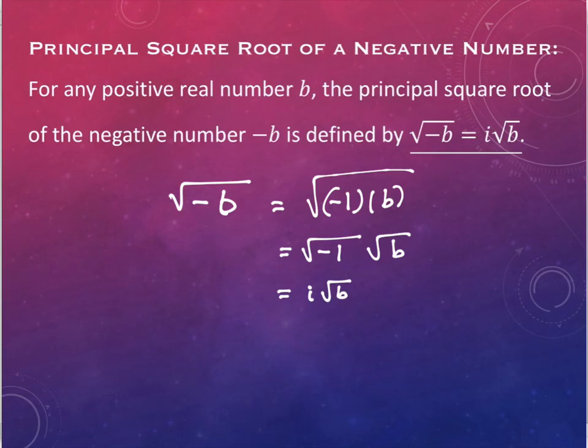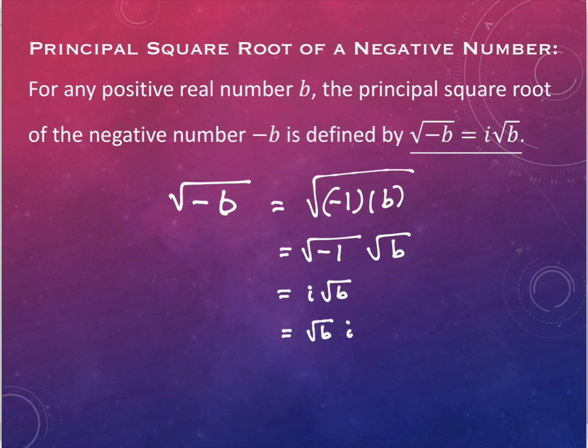Now, technically, if we were writing this in standard form, the i should come after the square root of b. However, I want you to be careful about this. I think it's a terrible idea to put the i afterward, and here's why: some of you do not write very neatly, and undoubtedly some of you are going to make it look like the i is under the radical when that's not what you meant.